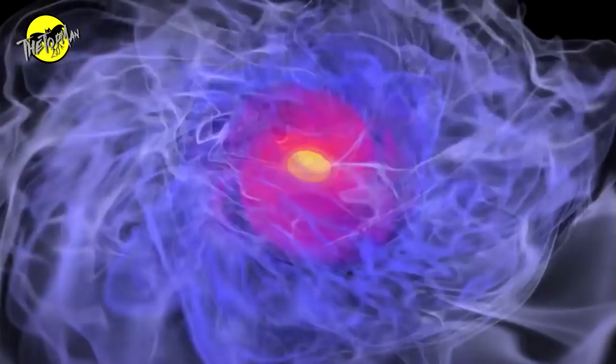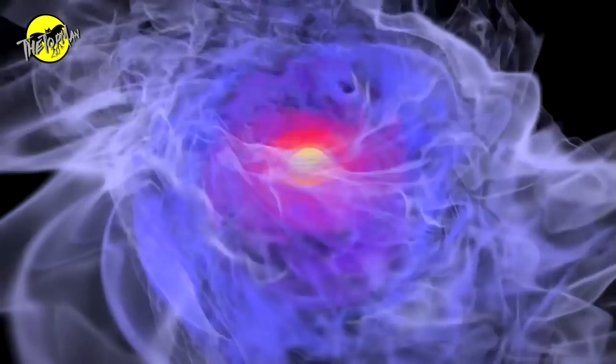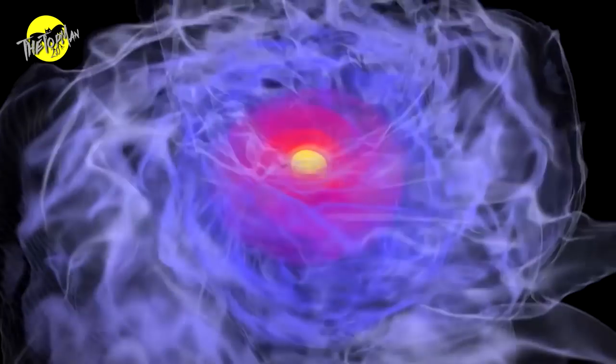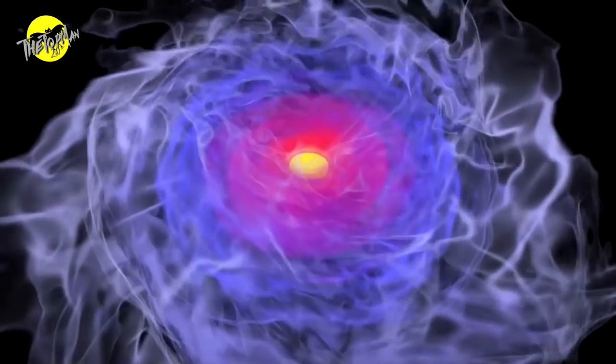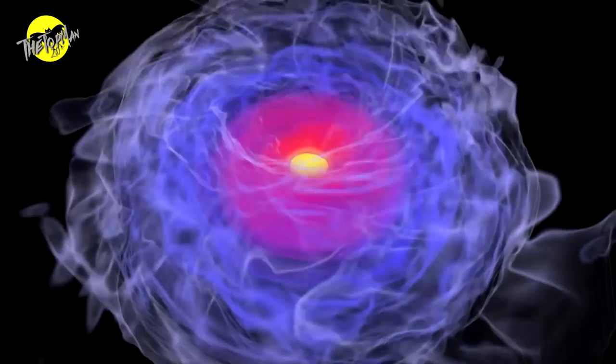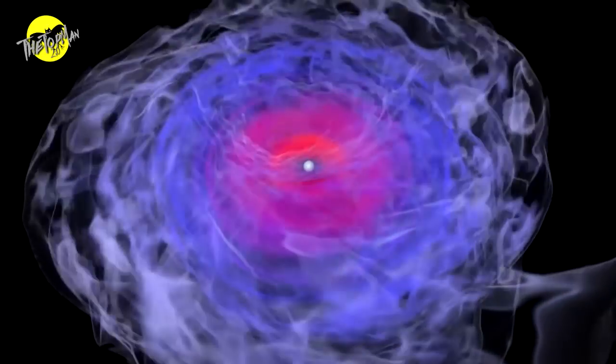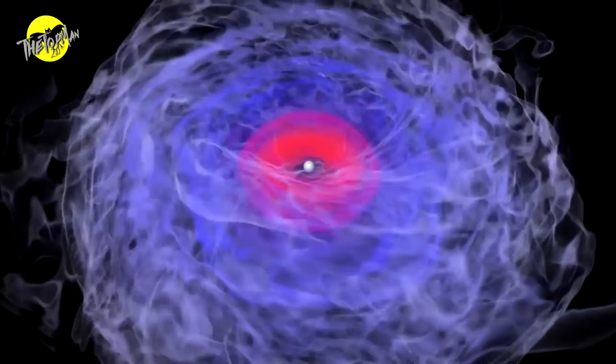As a result, the electrons and protons in it melt into neutrons. These are neutral particles with a mass a little higher than the proton. This, added to the pressure of degeneration, is what allows the formation of a very dense neutron star.